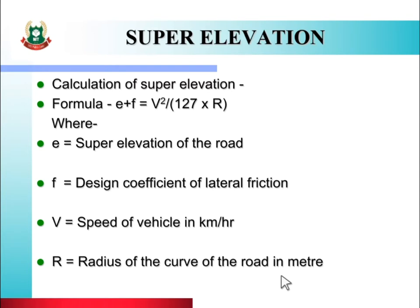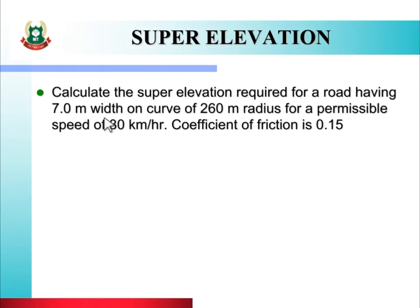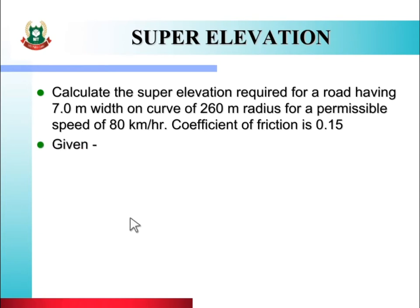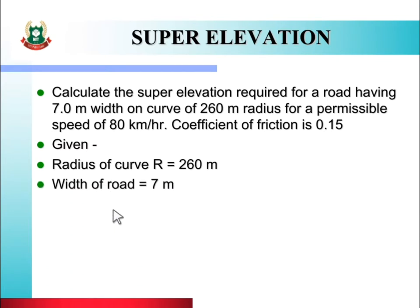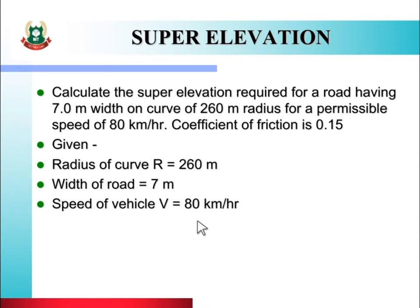By using this formula we can find super elevation. Let us take one simple numerical: Calculate the super elevation required for a road having 7 meter width on a curve of 260 meter radius, for a permissible speed of 80 km/h, with coefficient of friction 0.15. Given data: R = 260 m, width of road = 7 m, V = 80 km/h, F = 0.15.